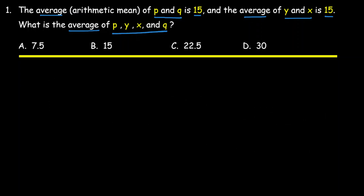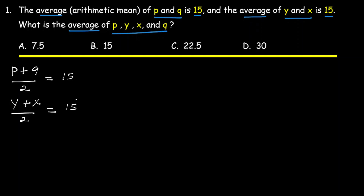So for P and Q, average equals (P + Q) divided by 2, which is 15. Similarly, for Y and X, average equals (Y + X) divided by 2, which is 15.